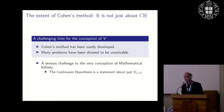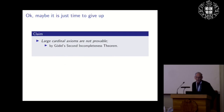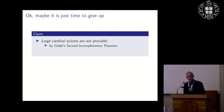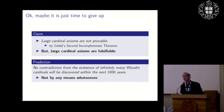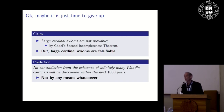The continuum hypothesis is just a statement about V-omega-plus-2, way at the bottom of the cumulative hierarchy, so things look like they're unraveling at the bottom. One could say it's time to give up. Large cardinal axioms are not provable by Gödel's second incompleteness theorem, but they are falsifiable if they lead to a contradiction. So I'll make my usual bold prediction: no contradiction from the existence of infinitely many Woodin cardinals will be discovered within the next thousand years — not by any means, including extraterrestrials who've been doing mathematics for a billion years, or an NP-complete oracle machine.